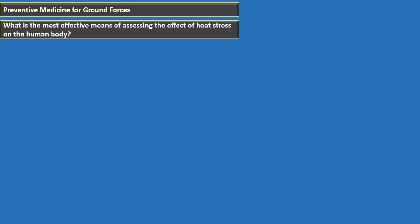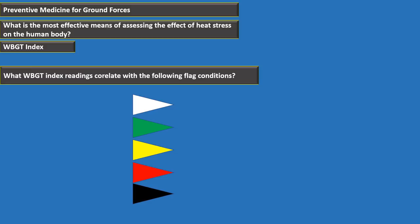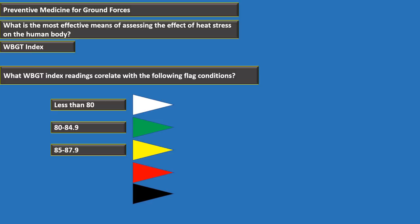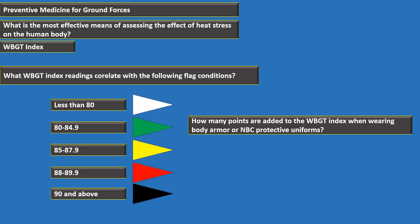WBGT flag conditions: White flag — below 80; Green flag — 80 to 84.9; Yellow flag — 85 to 87.9; Red flag — 88 to 89.9; Black flag — 90 and above. When wearing body armor or NBC protective uniforms, add 10 points to the WBGT index.